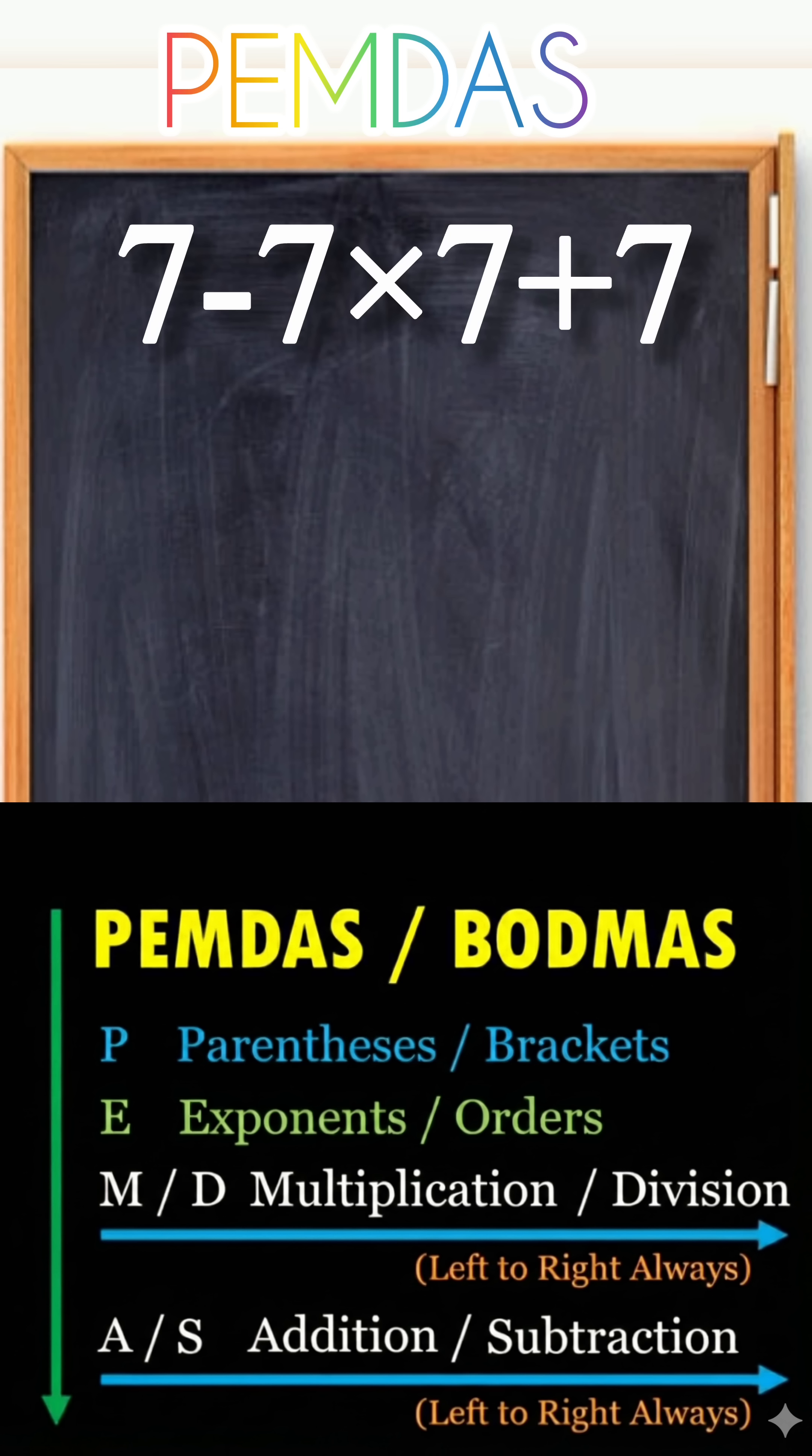And here's the key rule many people forget: when two operations share the same level, like multiplication and division, you always move from left to right. The same holds for addition and subtraction—left to right, always.